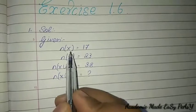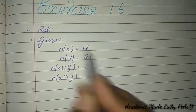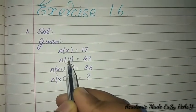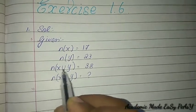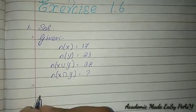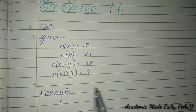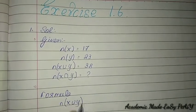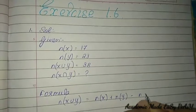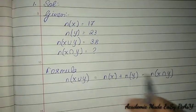Now let's see the solution. Writing the given part is very important — we may get one or half a mark for it. Number of elements in X is 17, in Y is 23, n(X∪Y) = 38, and we have to find n(X∩Y). The formula is: n(X∪Y) = n(X) + n(Y) − n(X∩Y), when X∩Y is not equal to the empty set.